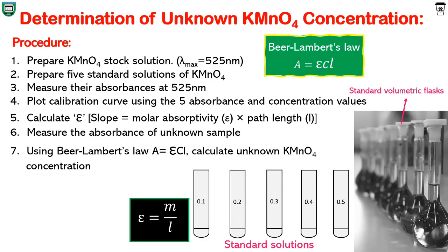First, prepare a KMnO₄ stock solution by dissolving the unknown KMnO₄ sample in deionized water to a certain concentration in a 1-liter standard flask. Then prepare 5 standard solutions — a series of solutions of increasing concentrations — from the stock solution and DI water. Label them as 0.1, 0.2, 0.3, 0.4, and 0.5 molar respectively.